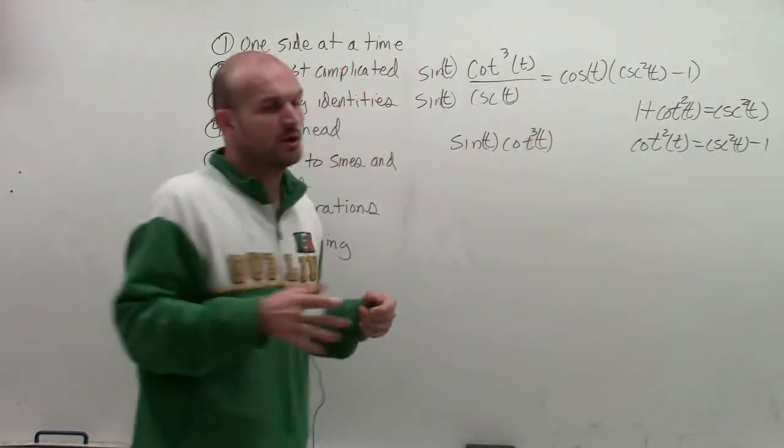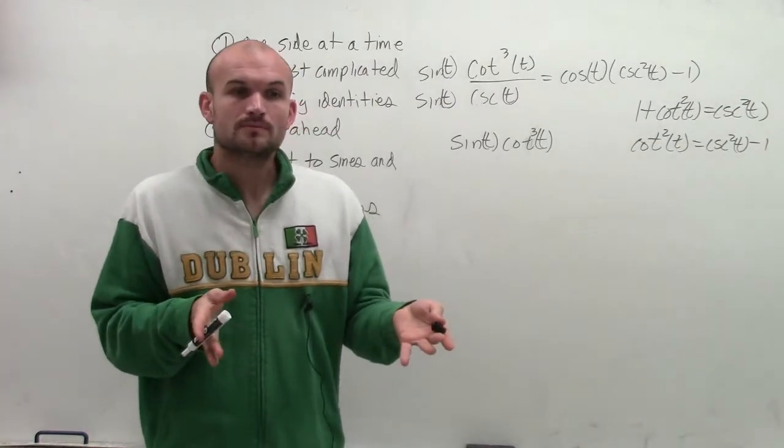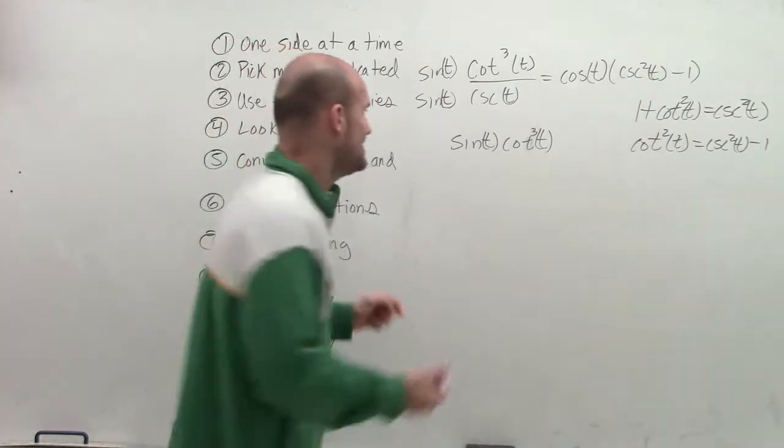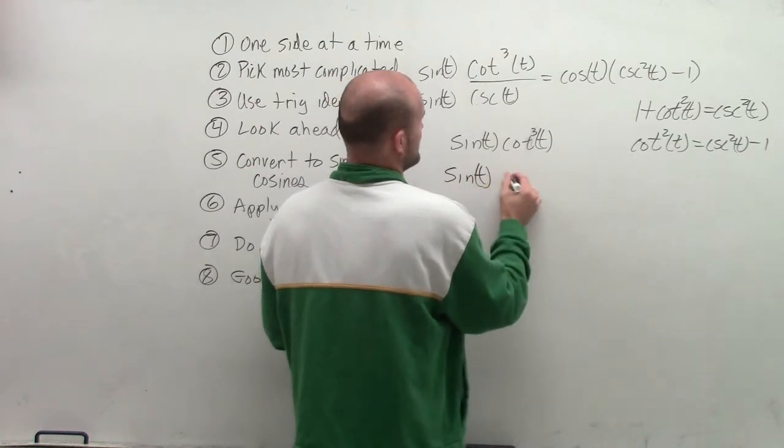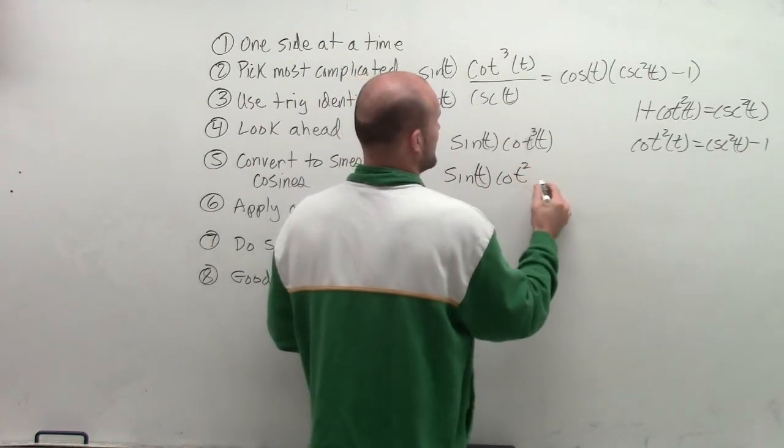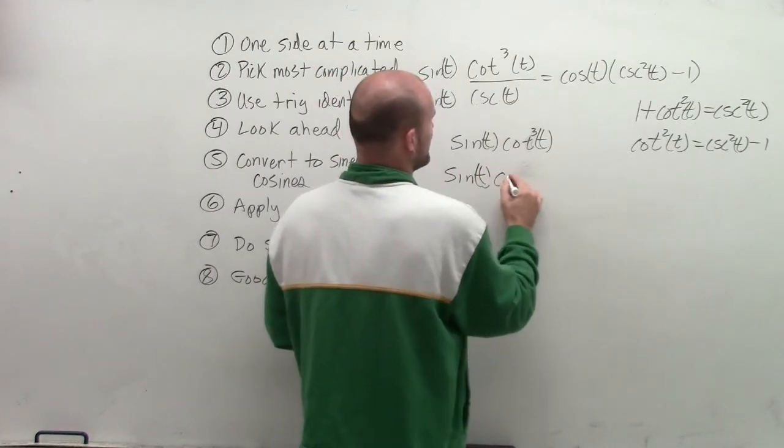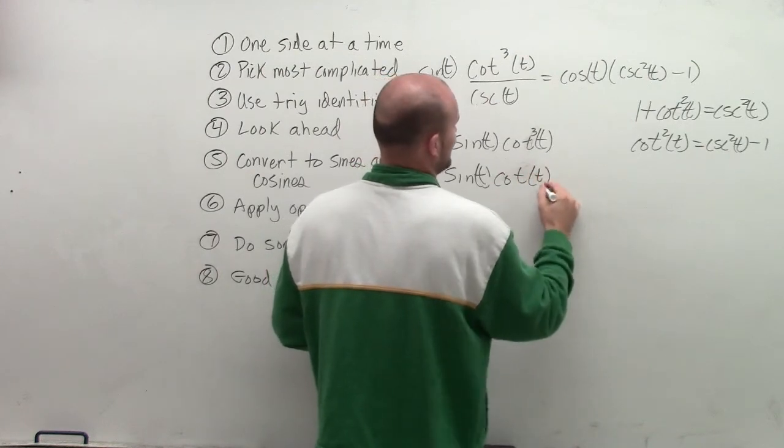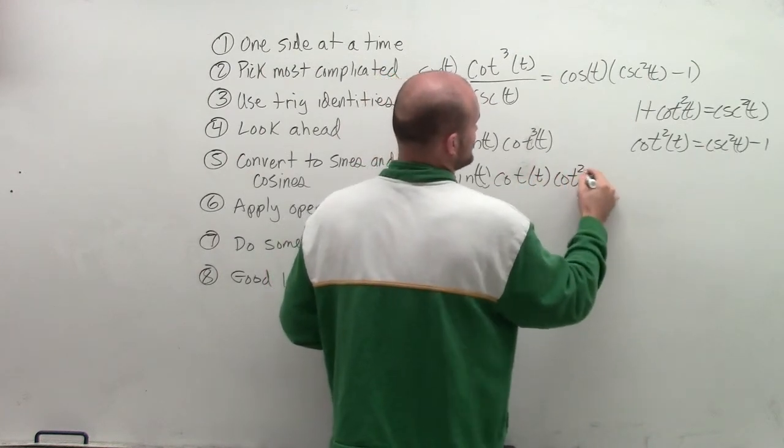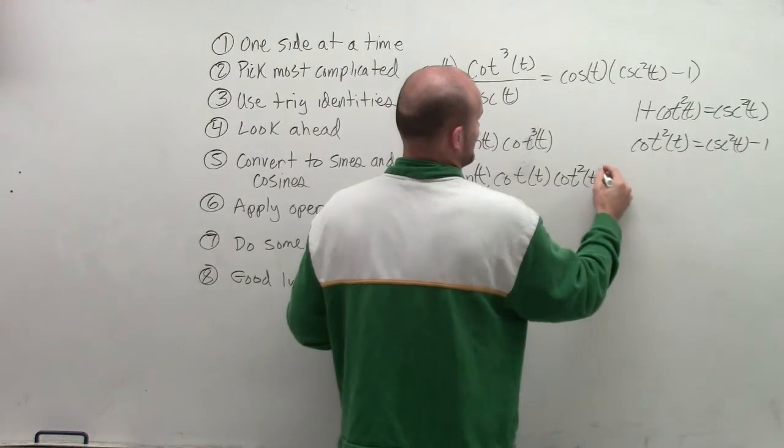So is there a way of going from cotangent cubed to cotangent squared? And yeah, what we can do is we can break that up. Let's do it this way. We can break that up as cotangent of t times cotangent squared of t.